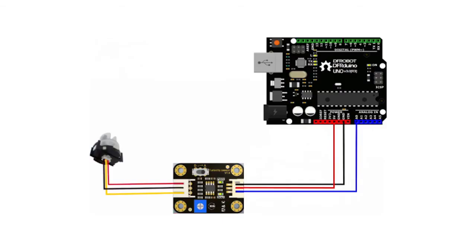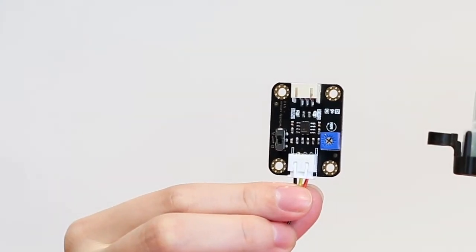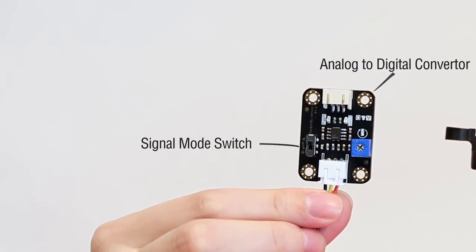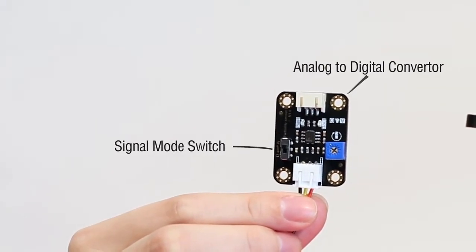Turbidity sensor connects to the microcontroller through an analog to digital converter. Through this A2D converter, the output signal can be switched between analog and digital.